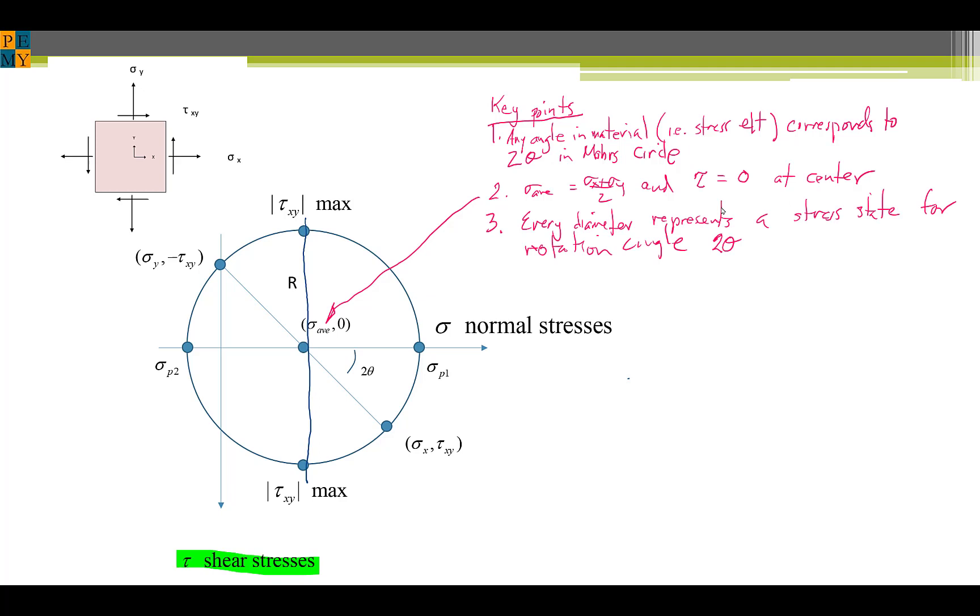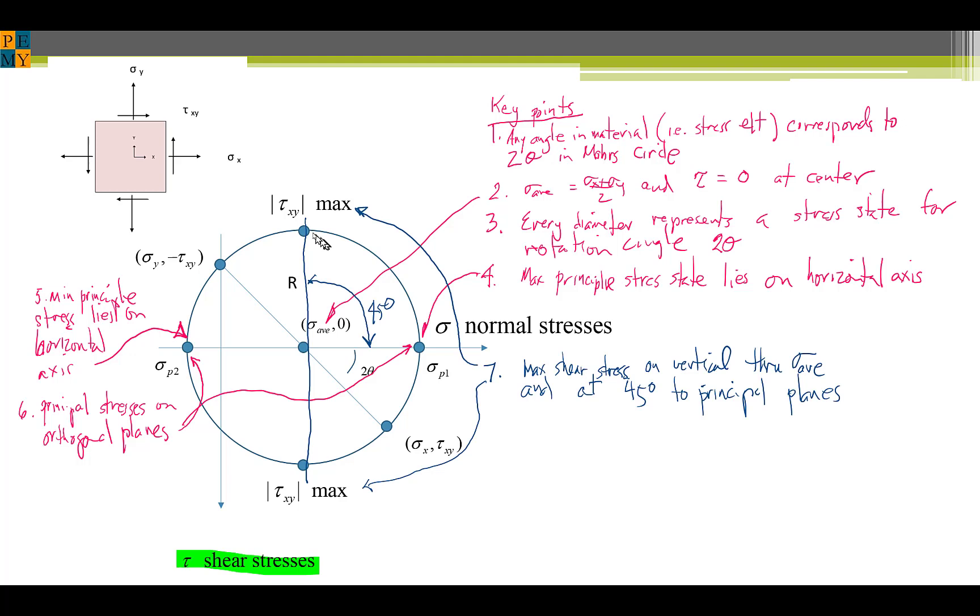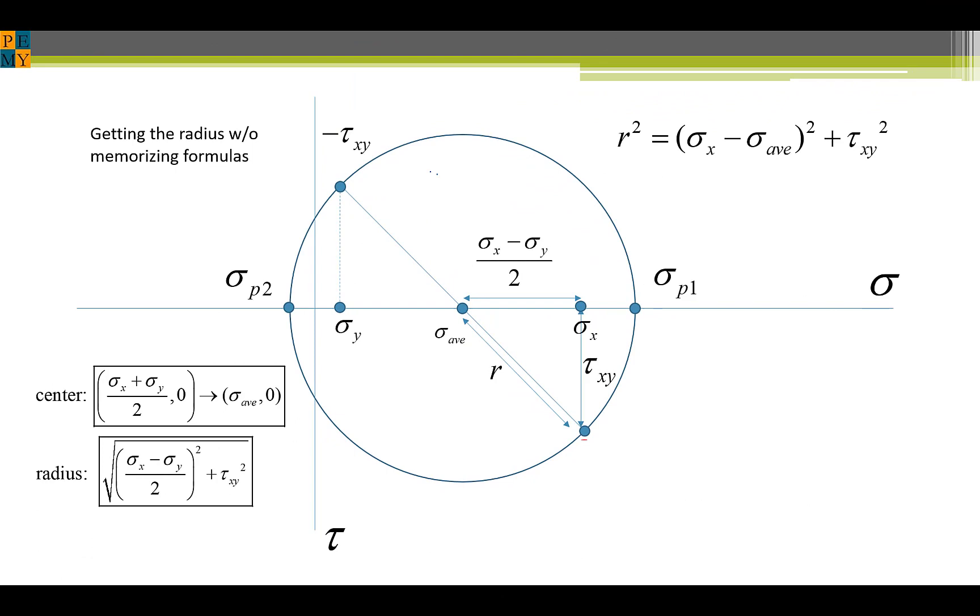Every diameter represents a different stress state or rotation angle for 2 theta. The maximum principal stress lies on the horizontal axis, as does the minimum principal stress. The principal stresses are on orthogonal planes. We've said that before, that principal stresses, if this is oriented to the principal stresses, this is the maximum principal stress, and this would be the minimum principal stress. The maximum shear stresses occur on a vertical line through the center. The magnitude of the maximum positive and negative are the same.